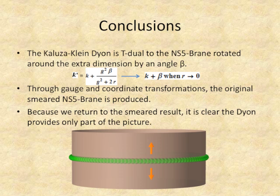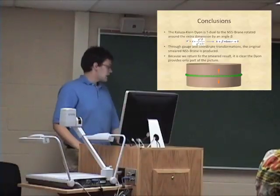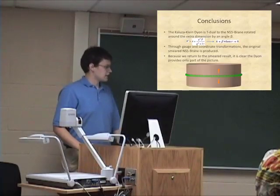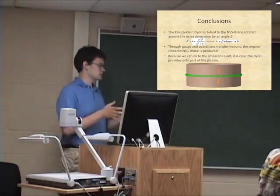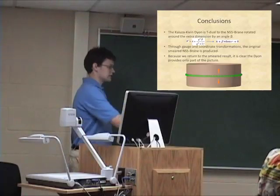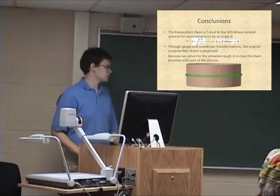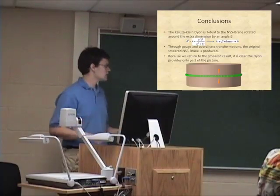My other conclusion is that through gauge transformations, I can produce the original smeared NS5 brane. The smeared solution means it took that one single point of the NS5 brane and averaged all of its positions around the extra dimension. It's good that I was able to return to it because it means everything's consistent. However, because we're returning to a smeared average result, rotating a smeared thing around the circle by some angle beta is going to do the same thing as with the monopole — it's not really going to change its position at all.